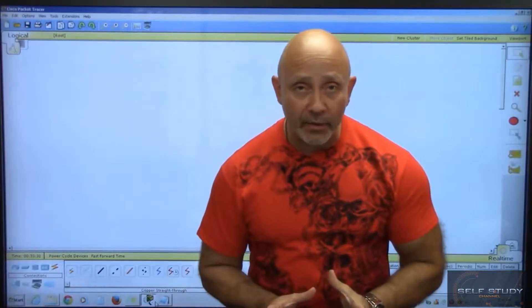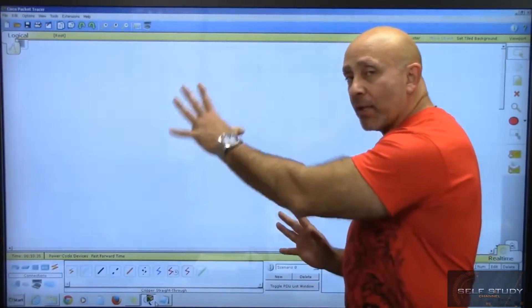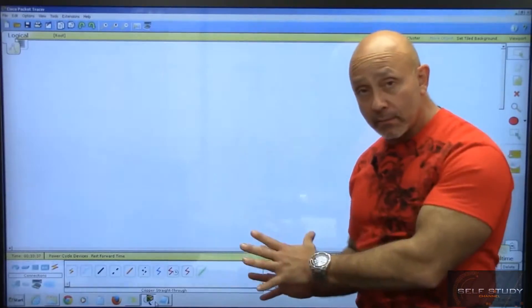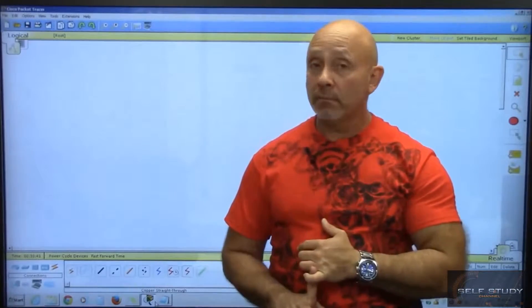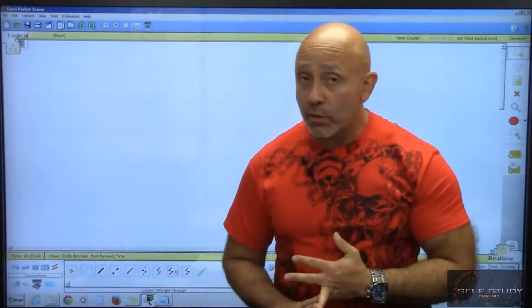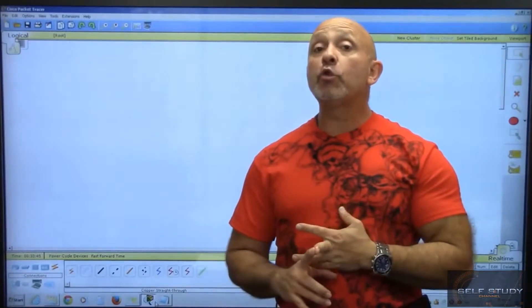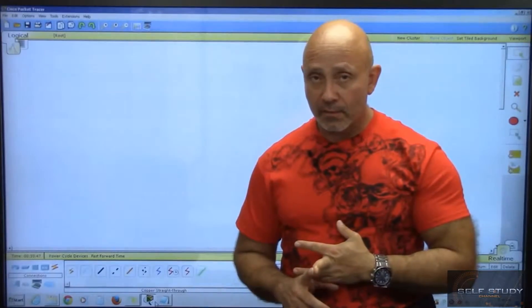Now that we know how to navigate Packet Tracer, what we're going to do is create a very simple topology on this blank screen. We're going to pull out a router, a switch, and two PCs, and we'll talk about that topology.